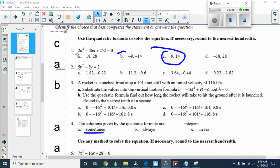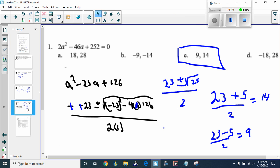This is number one, 2a squared minus 46a plus 252 equals zero. This is in standard form. So I'm going to figure out what a, b, and c are.